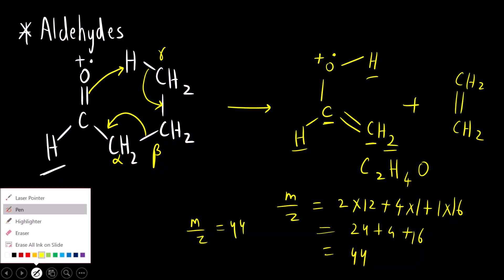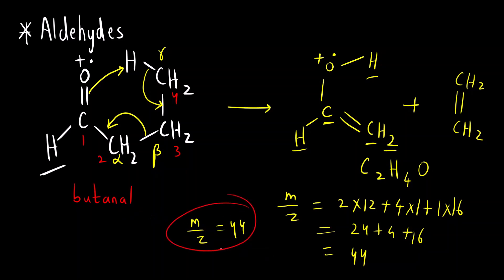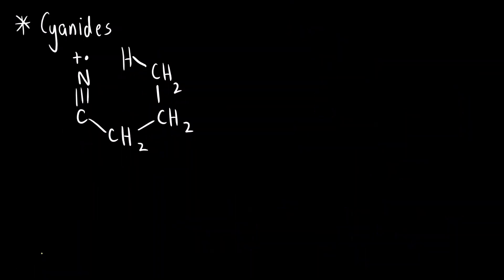If I want to write down the name of this compound: 1, 2, 3, 4 — four carbons. So this is butanal — butane with 'al' meaning aldehyde. So for butanal, we will get a peak at m/z = 44 that is due to the charged fragment formed by McLafferty rearrangement.